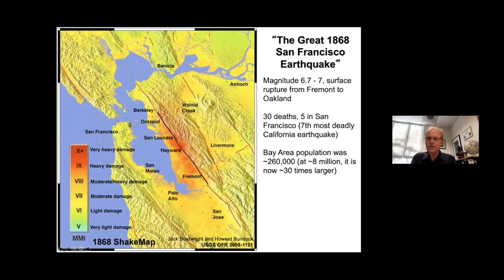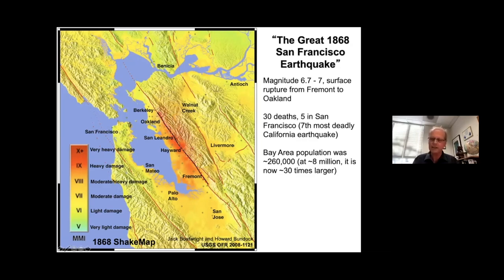The earthquake was referred to as the Great San Francisco Earthquake, a title taken away only in 1906 by a much larger earthquake that ruptured the San Andreas Fault. What you see here is a shake map — a distribution of shaking from reports, accounts, and images — showing the distribution and intensity of that shaking. We know this was an event of roughly magnitude 6.8, and it caused a large number of casualties, making it the seventh most deadly California earthquake. Back then, only about one-thirtieth the number of people lived in the Bay Area, so an event of comparable size today would clearly cause much more destruction, damage, and casualties.